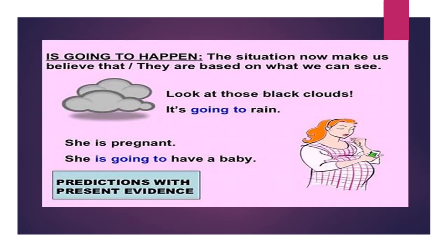Now for 'going to.' The present situation makes us believe something will happen — this is prediction with evidence. When I use 'going to,' I have evidence for what will happen. For example: 'Look at those black clouds — it's going to rain.' I have evidence for what I'm speaking about.